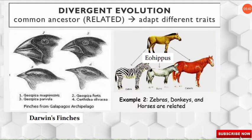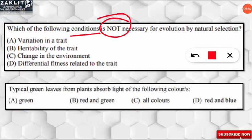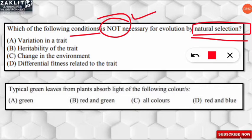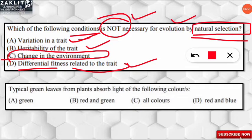The next question asks which condition is not necessary for evolution by natural selection. The answer is option C — changes in the environment are not necessary. The three conditions that are important for natural selection are: variation in a trait, heritability of the trait (the characteristic should pass from one generation to another), and differential fitness related to the trait. Environmental change is not required.